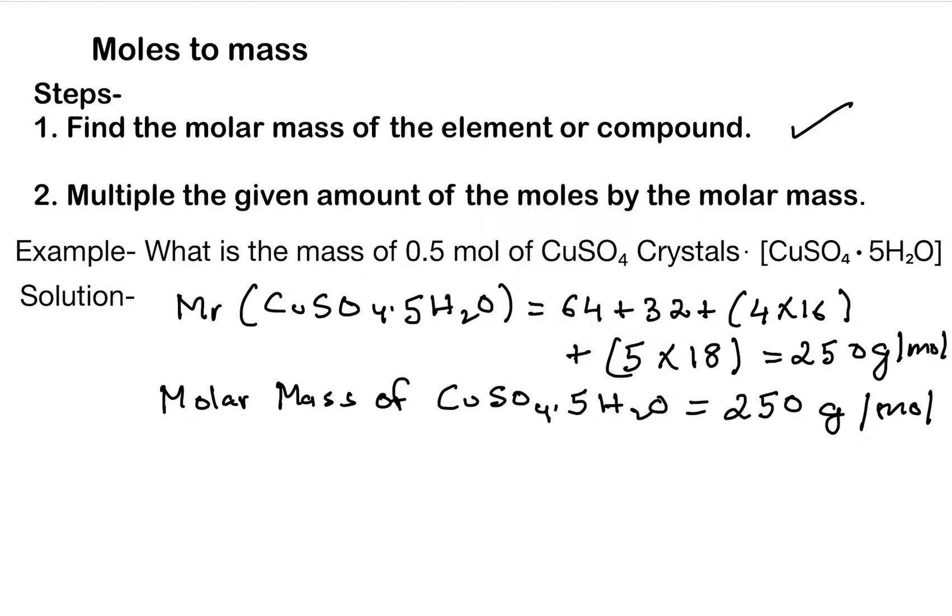The second step is multiply the given amount of moles by the molar mass. The amount of moles is 0.5. So let's do that step: 0.5 mole times 250 gram per mole equals to 125 gram of CuSO4·5H2O. So finally this is the answer.